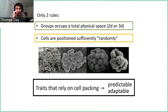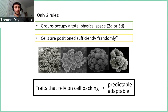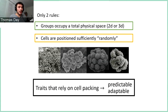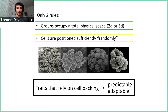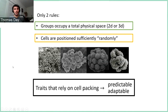There are really only two rules: groups have to occupy a total physical space — 2D or 3D — and every single multicellular group should follow this first rule. The second rule is that volumes are independently allocated and cells are positioned sufficiently randomly. Not all multicellular groups will follow this second rule, but we might expect simple disordered early-stage multicellular groups will. To test this, I ran simulations of a variety of different growth morphologies.